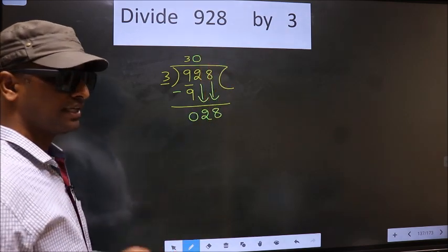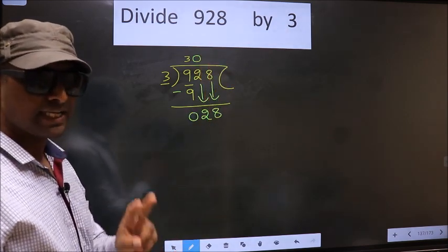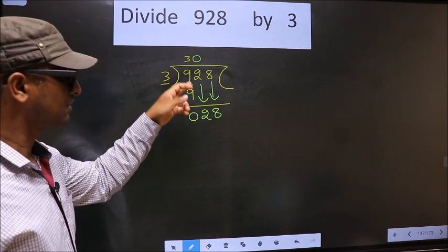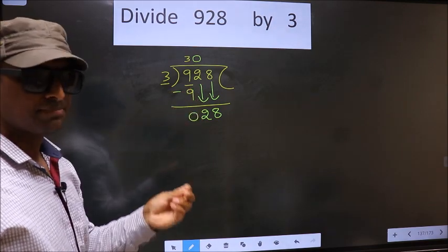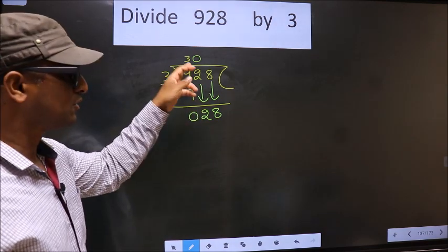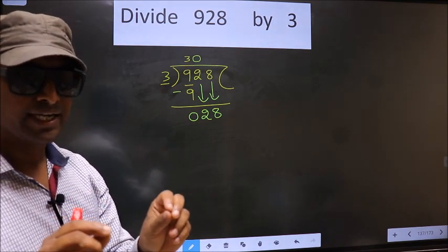I repeat. Whenever you are bringing down 2 numbers, compulsory you should put 0 in the quotient. Remember this point.